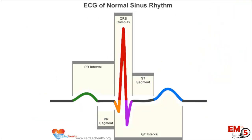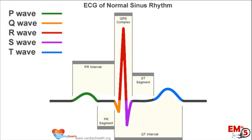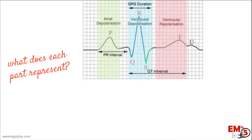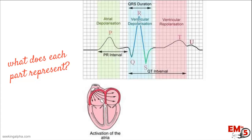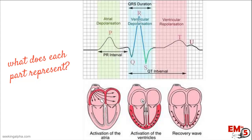First, let's review the waveform itself. The wave in green is the P wave. In orange, we have the Q wave, then in red the R wave. Purple is the S wave, and lastly we have the T wave in blue. The P wave represents atrial depolarization or activation. The QRS complex represents the ventricular part — that's really important to differentiate. The T wave is the repolarization or recovery of the ventricle.